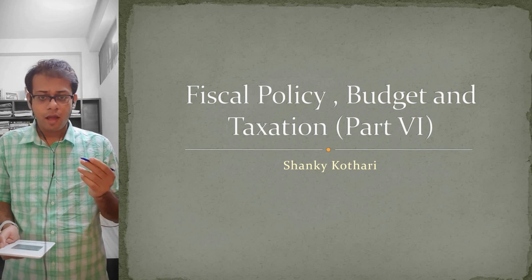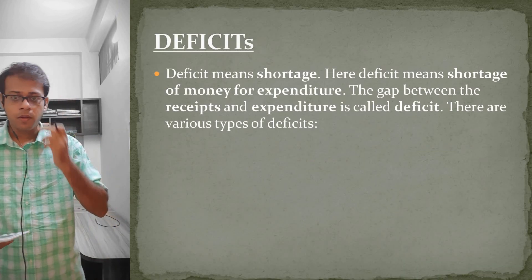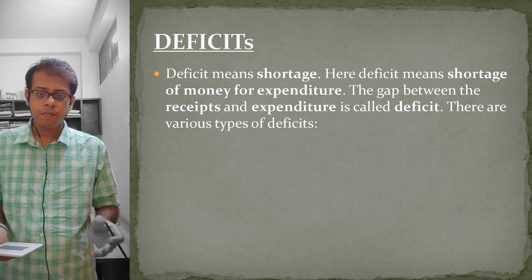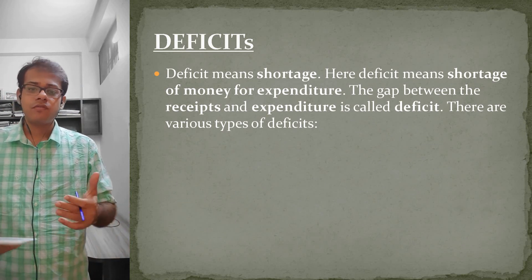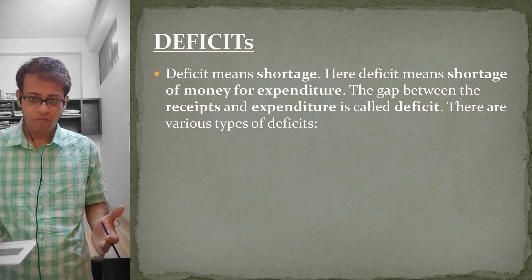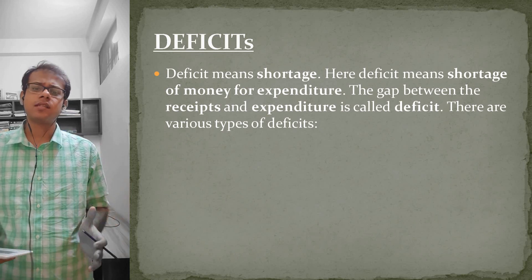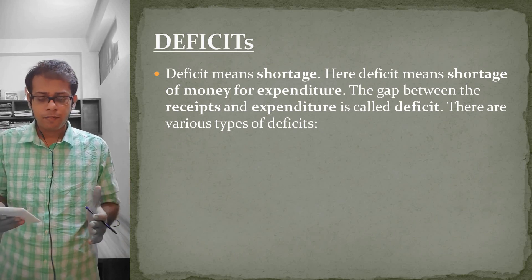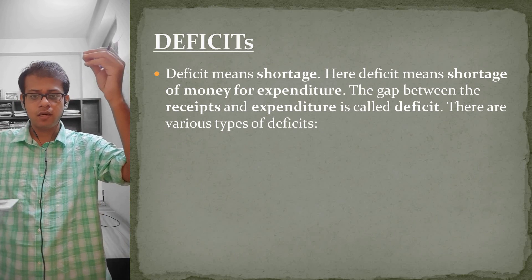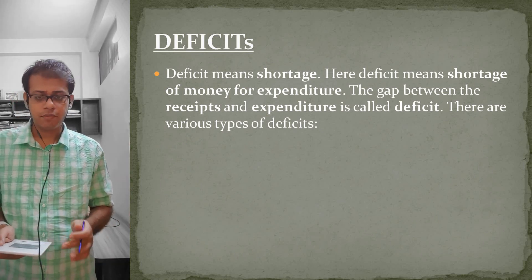In Hindi, we understand the deficit as kharche. You might have heard the term Fiscal Deficit, and in Hindi news channels and Hindi newspapers, you might have heard this term 'Vidya kharche'. This is only one kind of kharche which we read in the newspaper and news channels. There are various types of deficits for our syllabus to be understood. First, a general definition: deficit is a situation where your expenditure is high but your earning is low. This gap between high expenditure and low income is known as deficit. One by one, we will be looking at the various types of deficit.